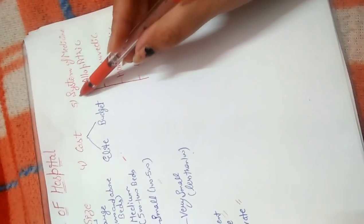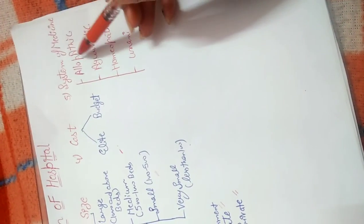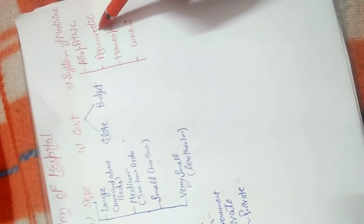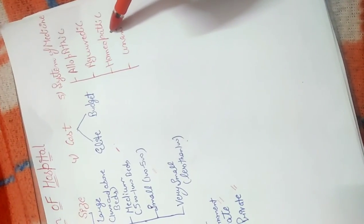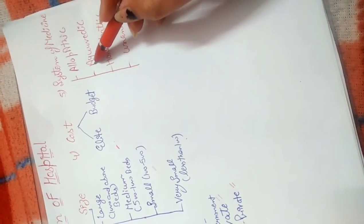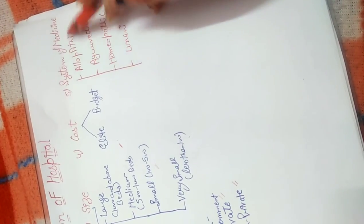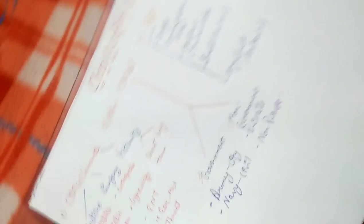Fifth and last is the system of medicines. Hospitals are classified on the basis of allopathic medicines, Ayurvedic medicines, homeopathic medicines, and Unani medicines. Basically, we mostly use allopathic medicines. So these are all the classifications of the hospital.